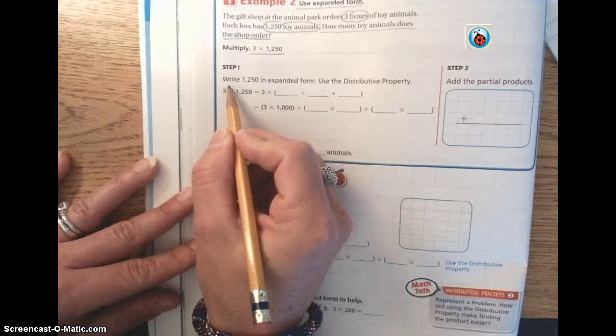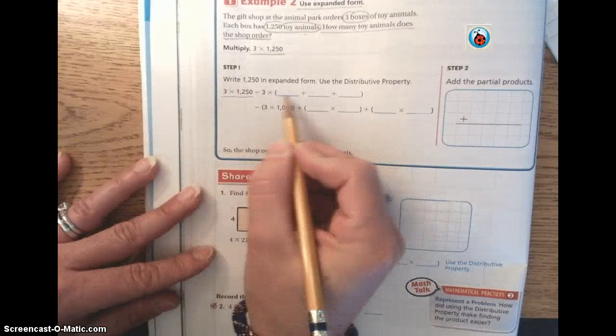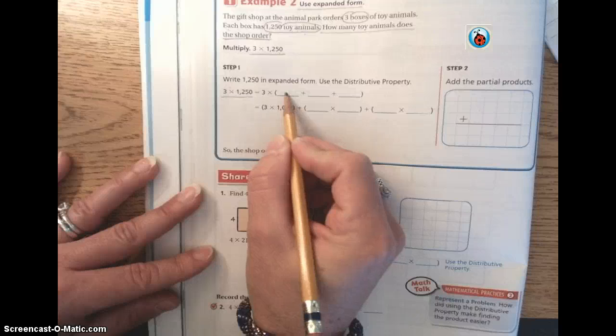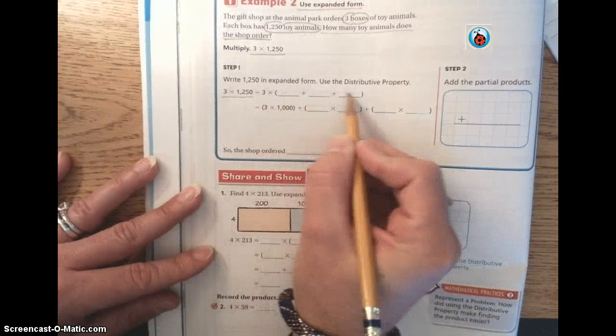We're going to write them in expanded form. So taking the multiplication problem, we're going to break it into thousands, hundreds, tens. So we have three times 1,000.